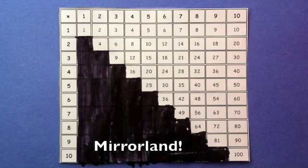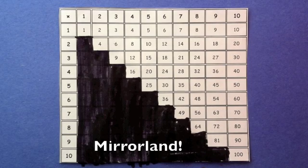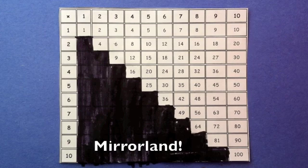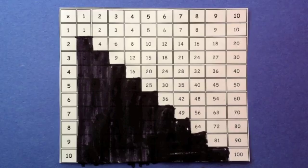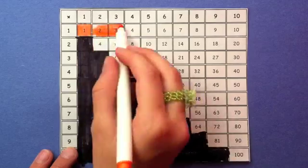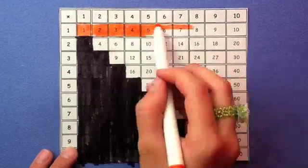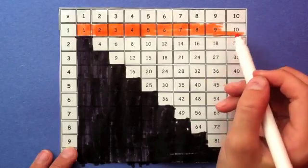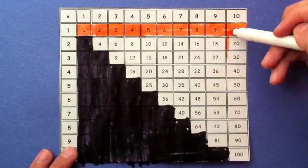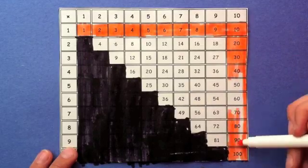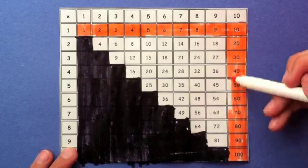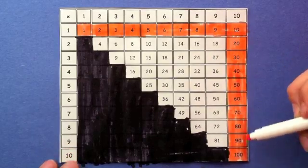But wow! That's still a lot! What are we going to do? Well, hold on there. Some of these facts are really easy. Like the ones. Anything times 1 equals itself. So we don't need to memorize those. Anything times 10, you just add a 0 at the end. So we don't really need to memorize those either. And if we take all these off the list, then we only have 36 facts to go.